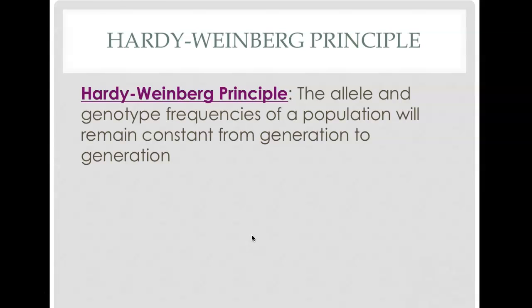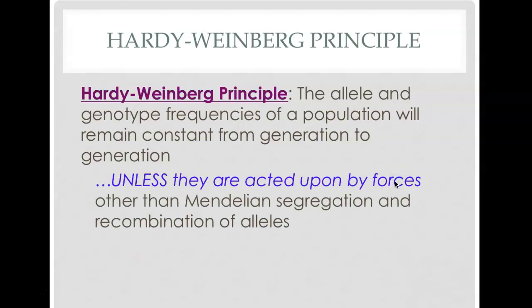Now we're going to talk about the Hardy-Weinberg principle. The Hardy-Weinberg principle states that the allele and genotype frequencies of a population will remain constant from generation to generation. It is never actually true in nature — it serves as a standard of comparison to see how much something is evolving. The principle states these things remain constant unless acted upon by forces other than Mendelian segregation and the recombination of alleles.